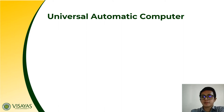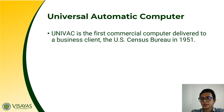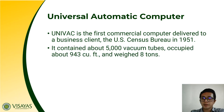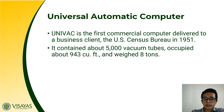From EDVAC, it was further improved into the UNIVAC, or Universal Automatic Computer, which was the first commercial computer delivered to a business client — the U.S. Census Bureau — in the year 1951. It still contained about 5,000 vacuum tubes, much fewer compared to ENIAC and EDVAC, but still made use of vacuum tubes, thus dissipating more heat. It occupied about 943 cubic feet and had a weight of 8 tons.